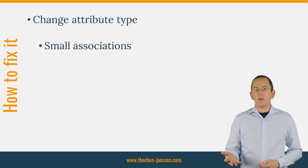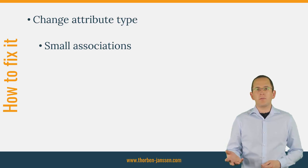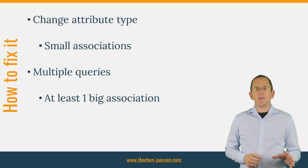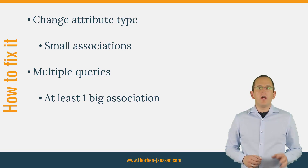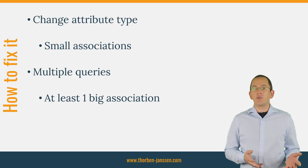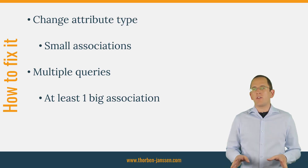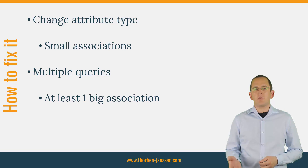If all of your associations only contain a small number of elements, the created Cartesian product will be relatively small. In these situations, you can change the types of the attributes that map your associations to a java.util.Set. Hibernate can then fetch multiple associations in one query. If at least one of your associations contains a lot of elements, your Cartesian product will become too big to be fetched efficiently in one query — you should then use multiple queries that get different parts of the required result. Optimizing the performance of your application requires you to choose between different tradeoffs, and there is no one-size-fits-all approach. The performance of each option depends on the size of the Cartesian product and the number of queries you are executing.